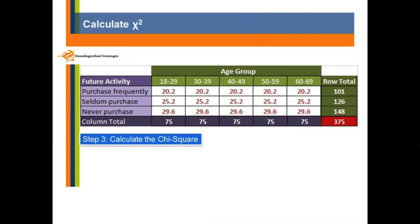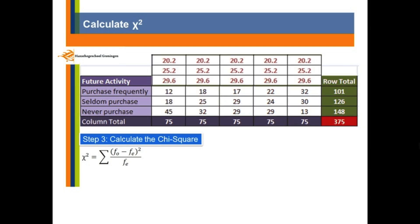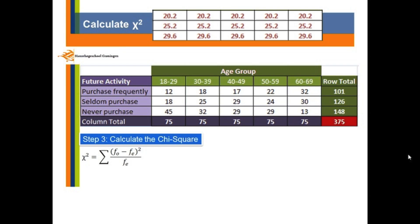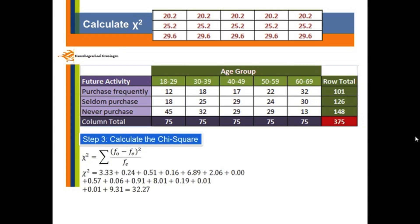Now you can go to the third step to calculate the chi-square. The equation for the chi-square is sigma (Fo minus Fe) squared, divided by Fe, where Fo is the observed frequency and Fe is the expected frequency. So in this case, 20.2 is Fe and 12 is Fo. The first number is (12 minus 20.2) squared, divided by 20.2. You do it for each cell, then add them all up. So your chi-square will be 32.27.